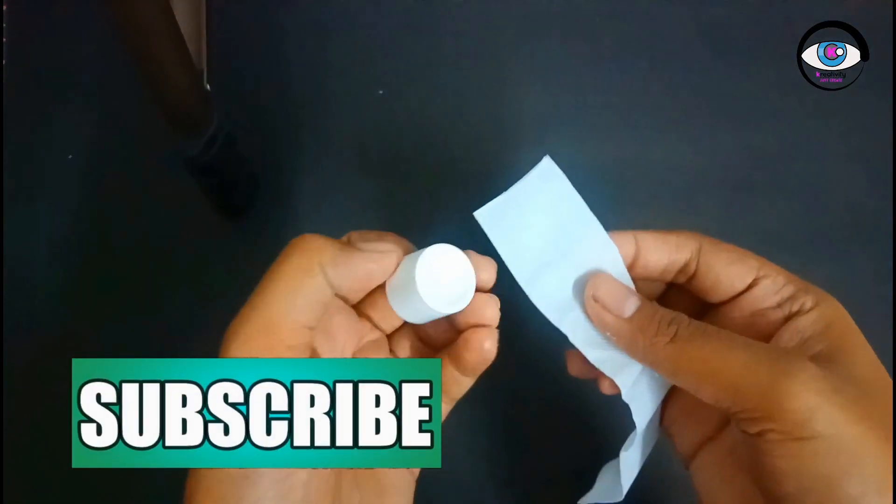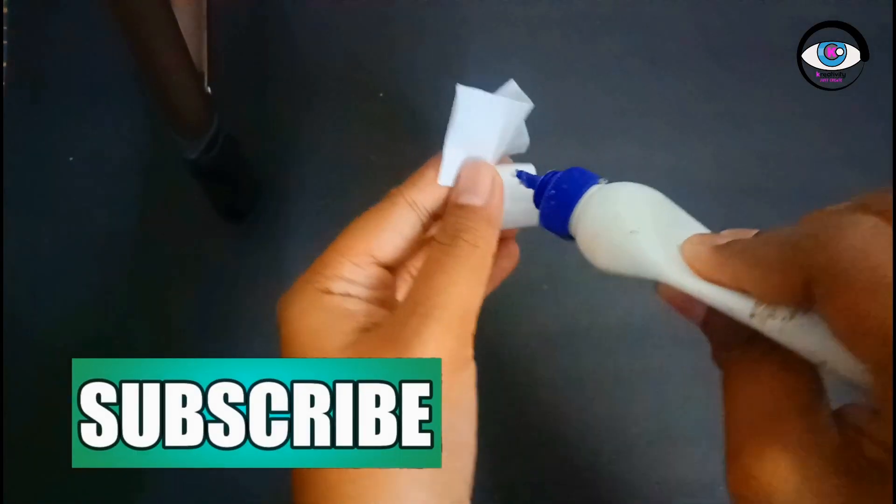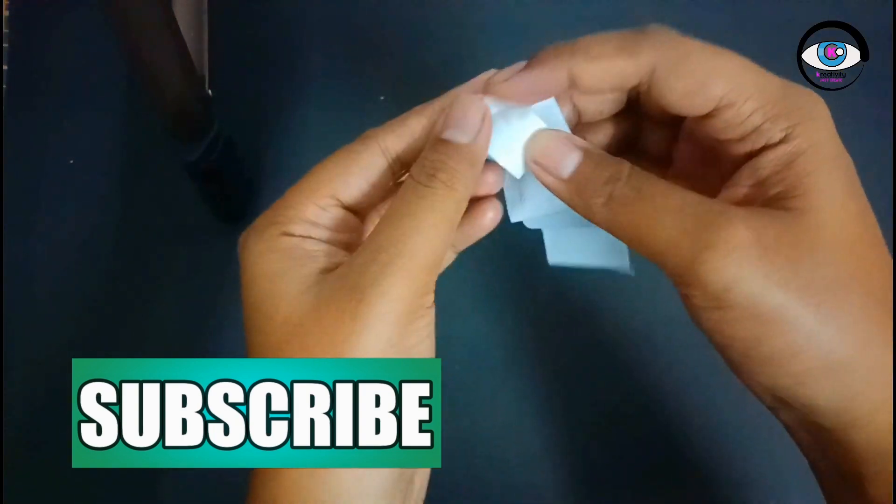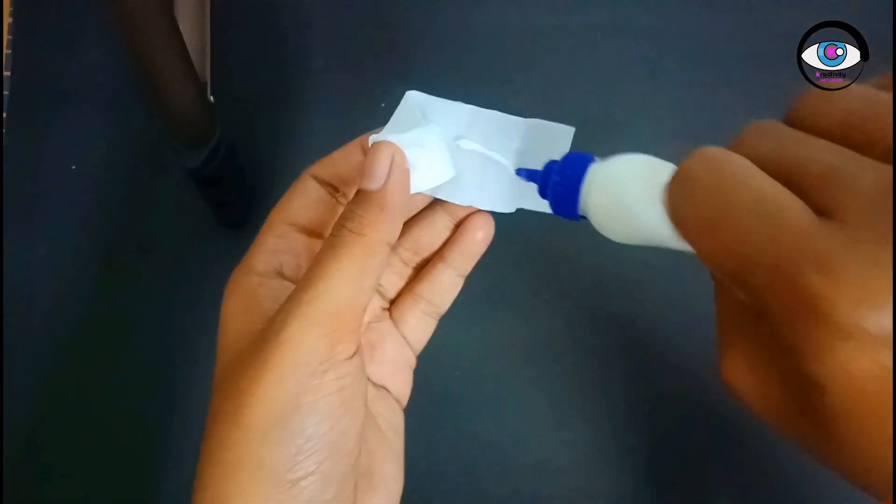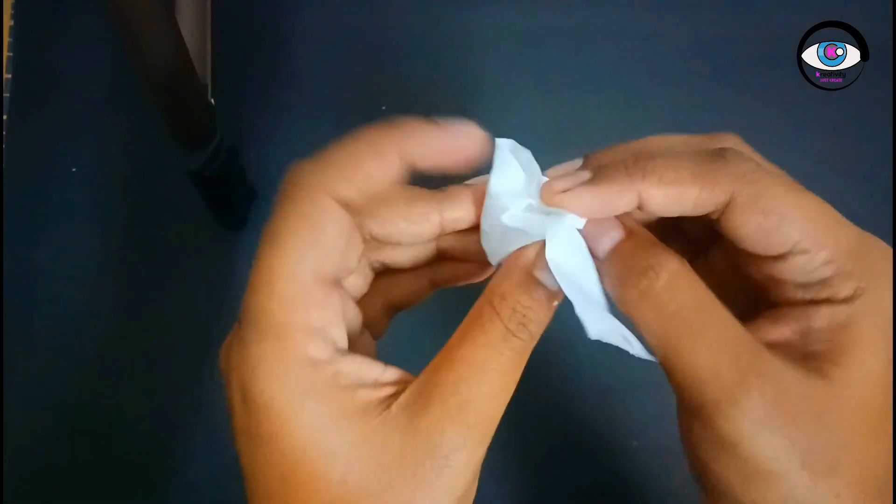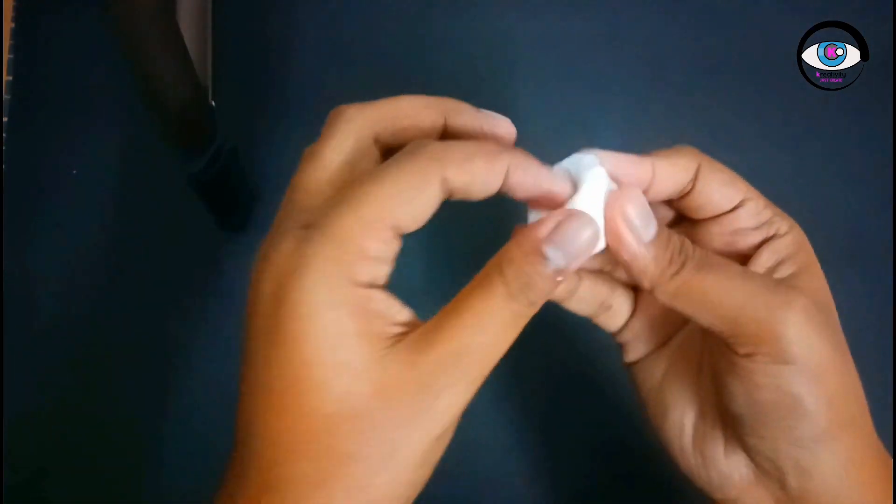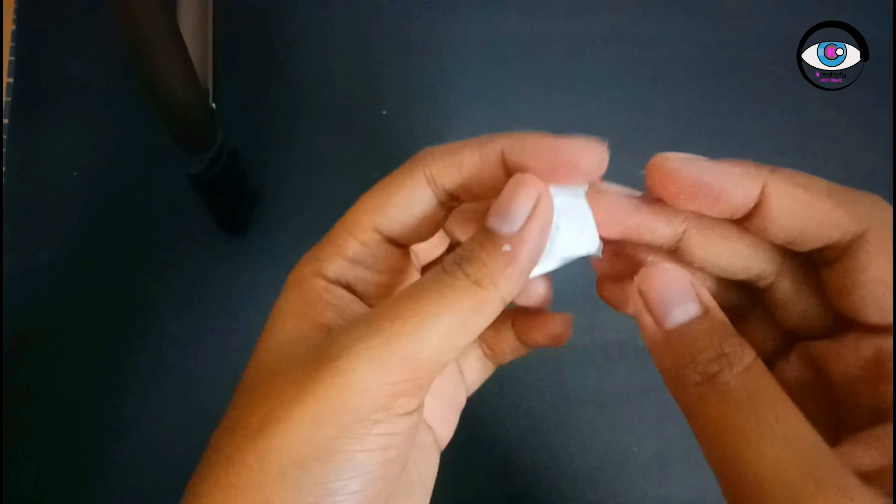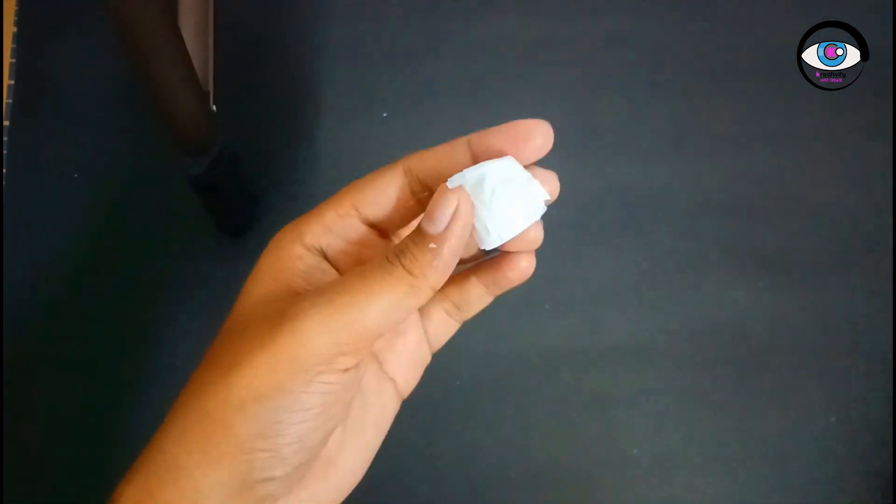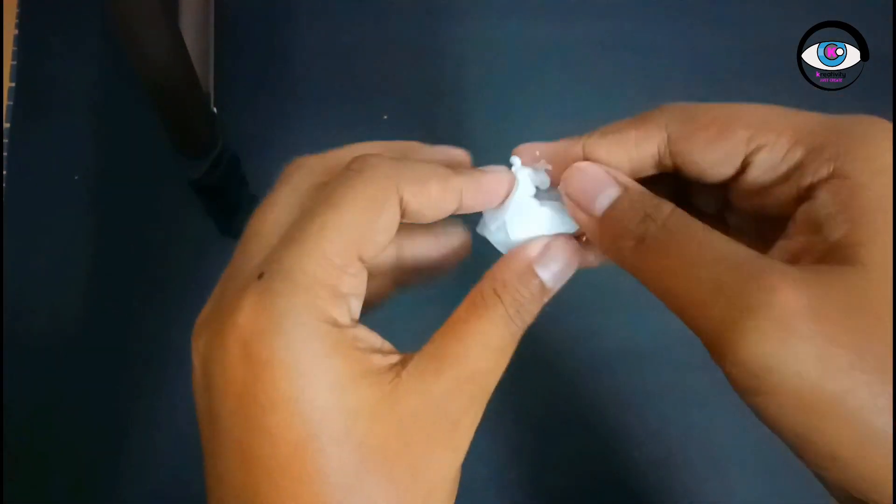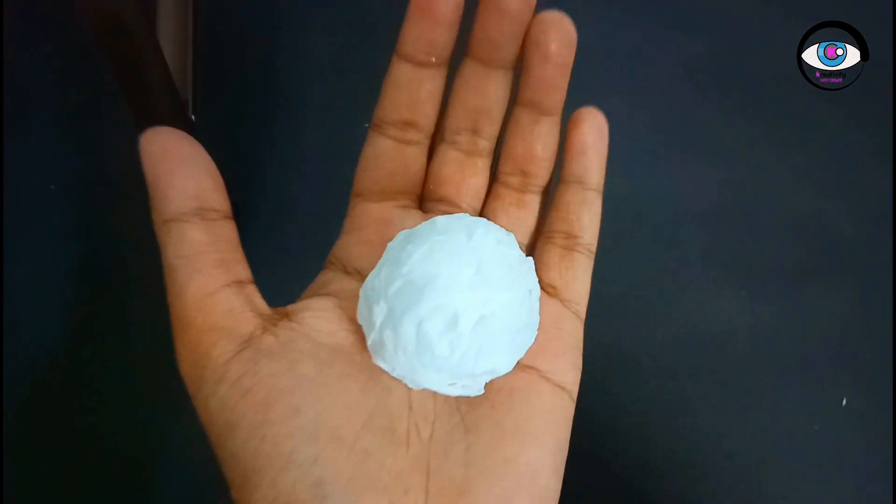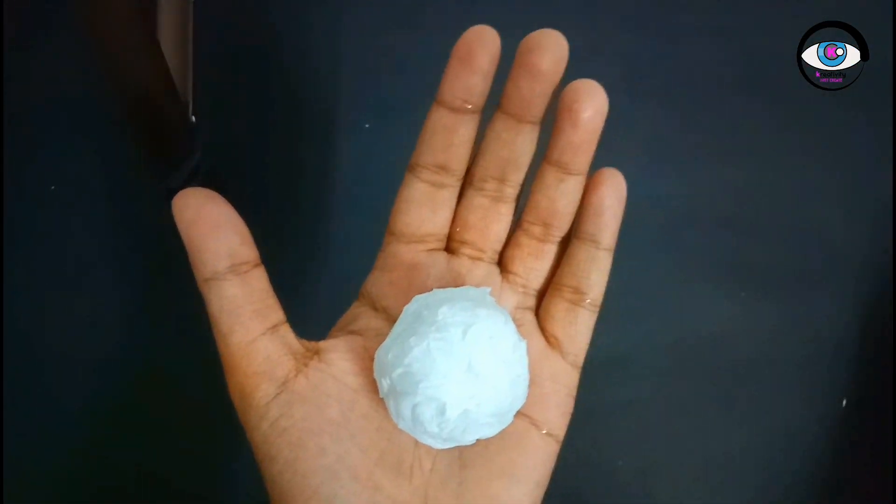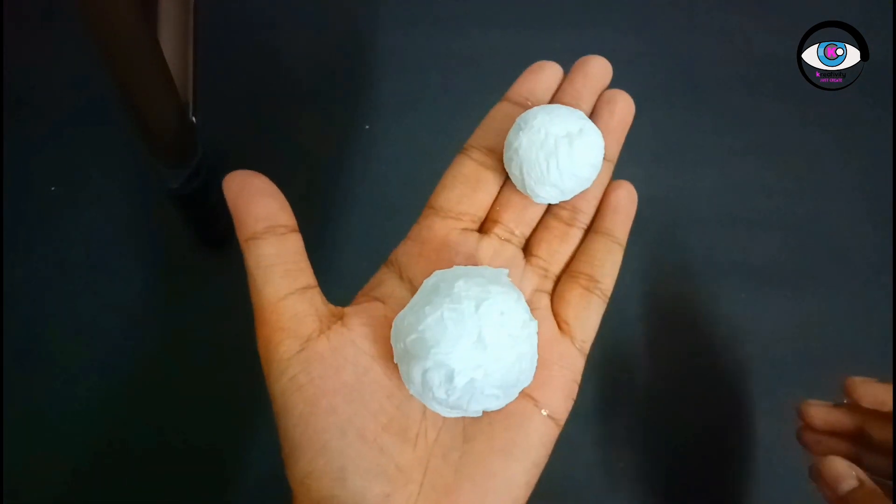Now, take a cap like this and cover it with tissue paper without covering the bottom part. Also, make a smaller one like this for the head.